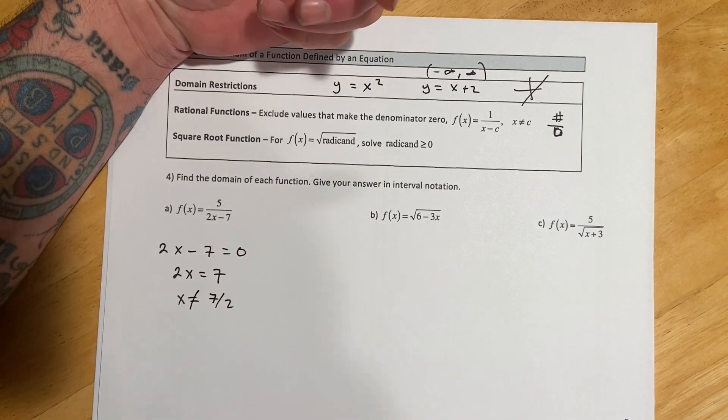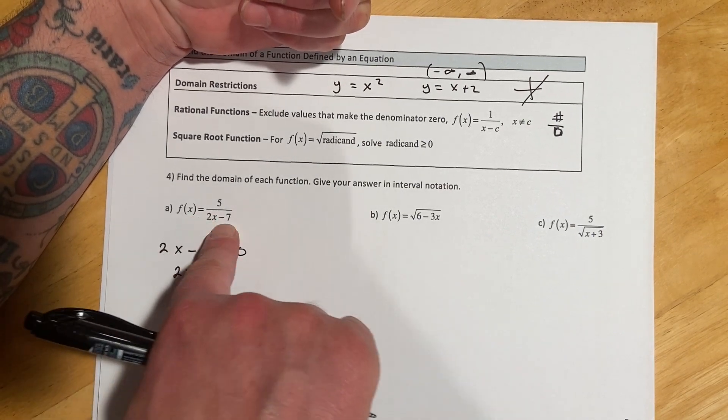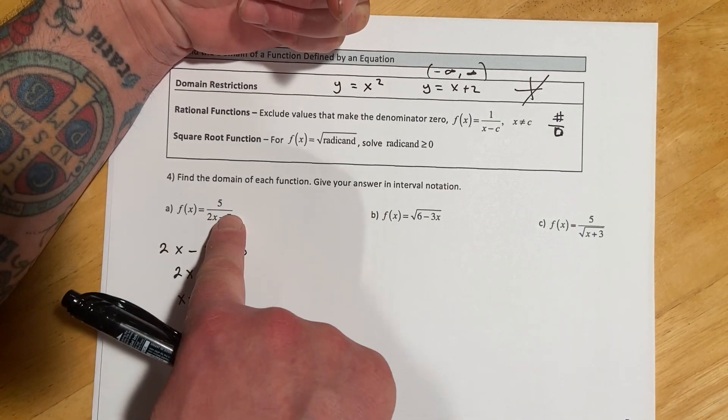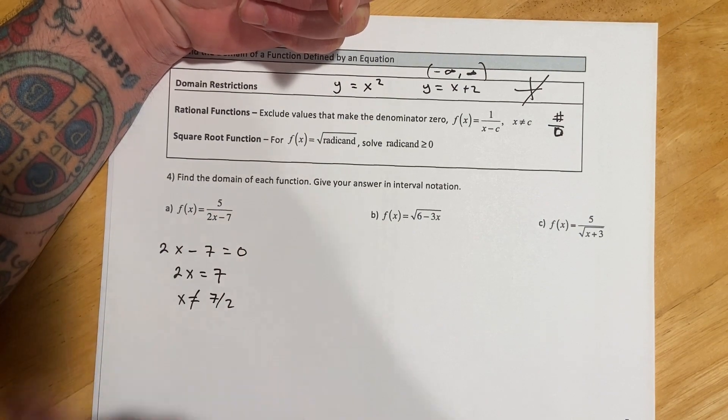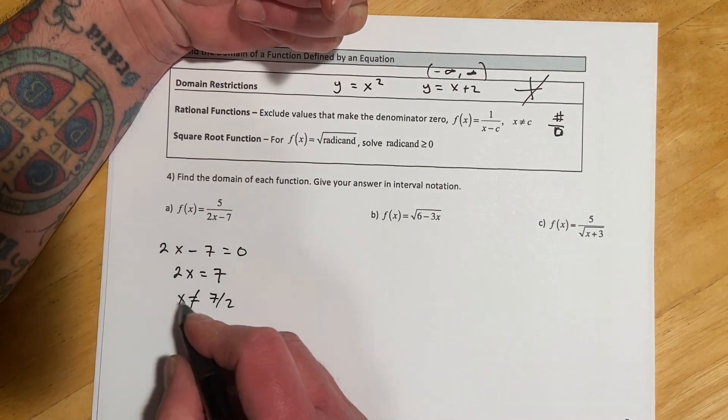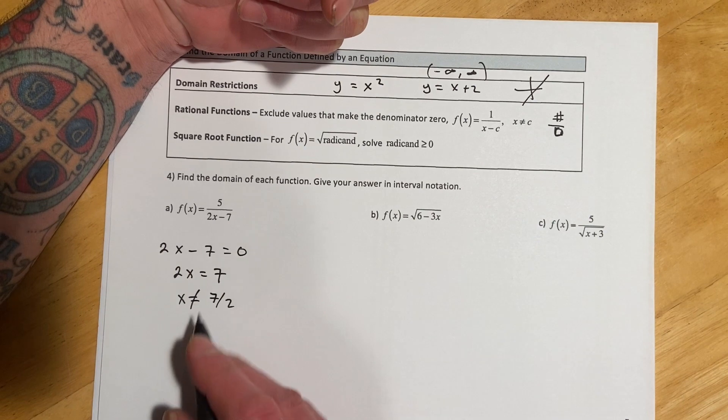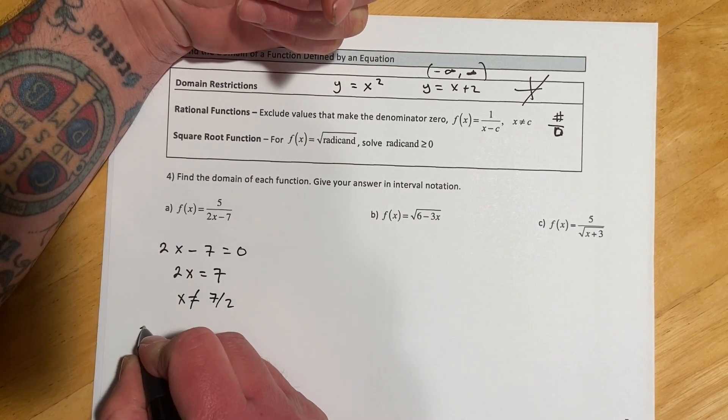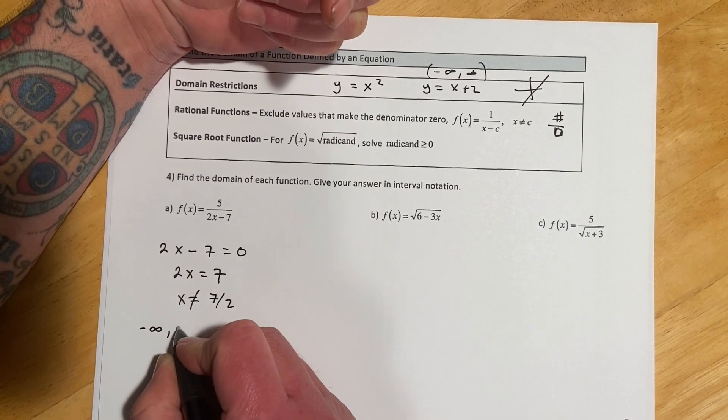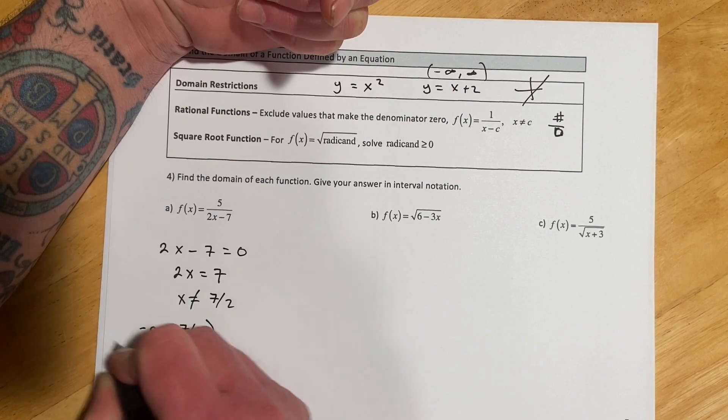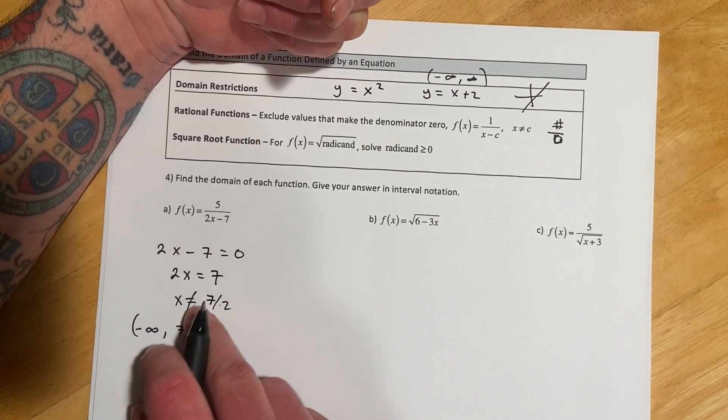But remember, this is really what we can't have, because if it was 7 halves, the 2s would cancel. 7 minus 7 is 0. 5 divided by 0 would be undefined. So here, to write this in interval notation, it's kind of annoying. We have to go, we're going to go from negative infinity up to the 7 halves, and then we're going to use a parentheses to exclude the 7 halves, because we don't want to include it.